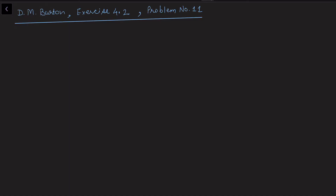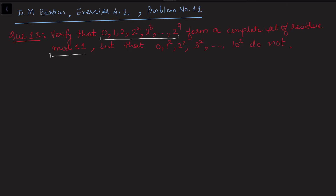In this video I'll be solving a problem taken from the book Burton, Exercise 4.2, problem number 11. Problems 1 to 10 of Exercise 4.2 I have already solved in my last video, link added in description. This question asks us to verify that {0, 1, 2, 2², 2³, ..., 2⁹} forms a complete set of residues modulo 11.